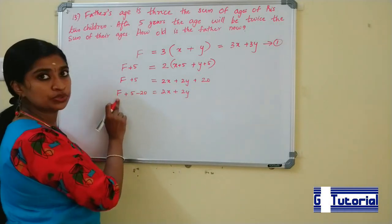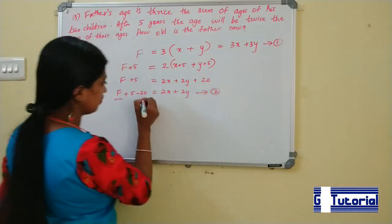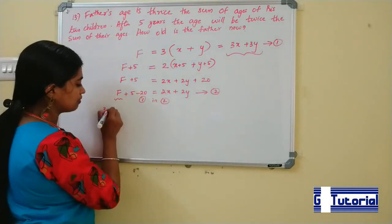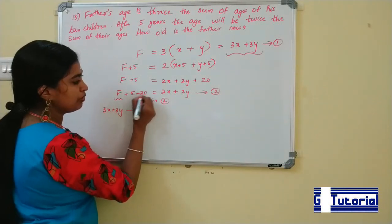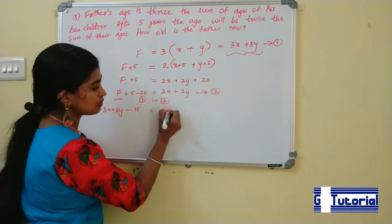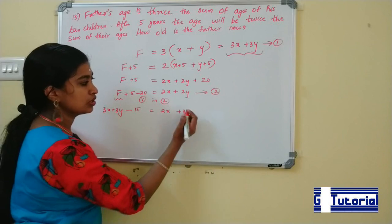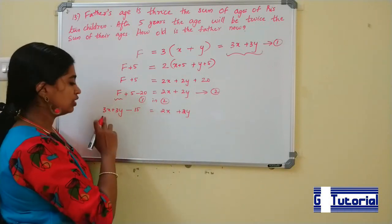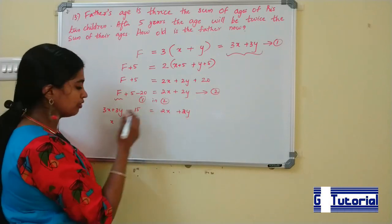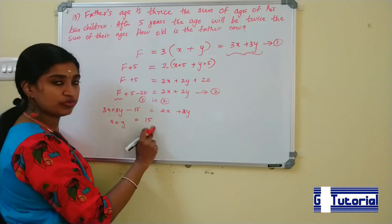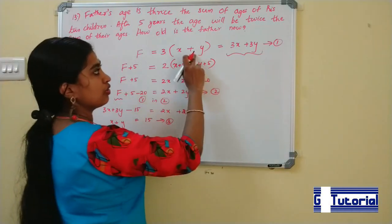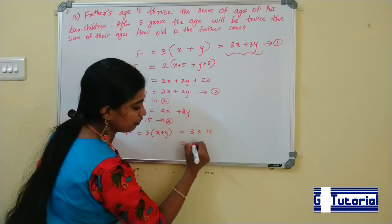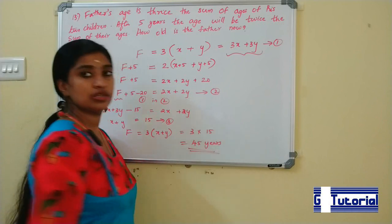Now we substitute Equation 1 into Equation 2. Substituting f = 3x + 3y: 3x + 3y − 15 = 2x + 2y. Moving terms: 3x − 2x = x and 3y − 2y = y, giving x + y = 15. Then substituting back into Equation 1: f = 3(x + y) = 3 × 15 = 45. The father's age is 45 years.